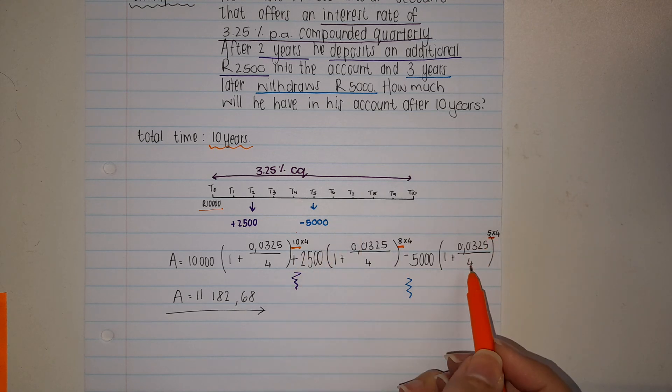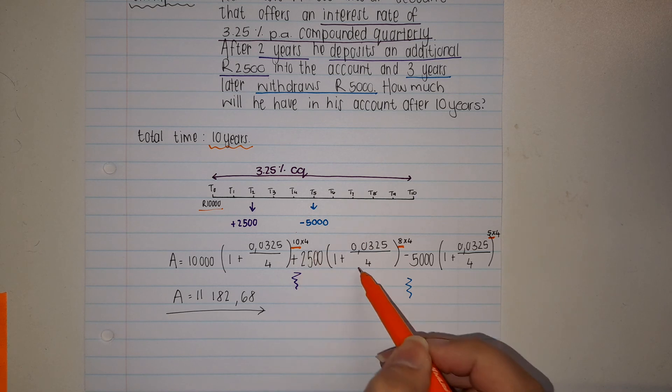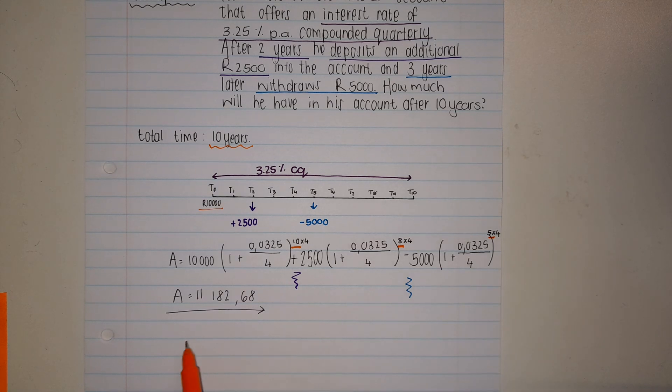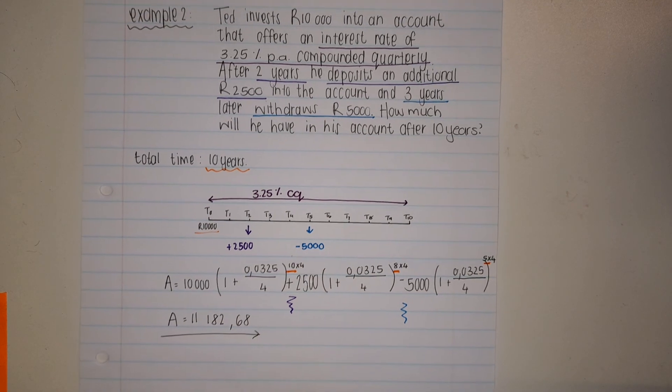You add and subtract as you need. If they added to the account you add, if they subtracted and withdrew you subtract. Then you type this whole thing into your calculator and you get 11,182.68 rand. And that is timelines.